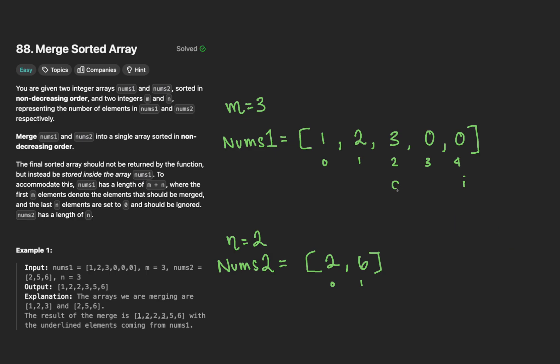We're going to have another pointer called a. This is at the last number of nums1 or the mth element. And then we're going to have b, which will be at the last index of nums2. Now that we have our pointers, let's step through our algorithm.